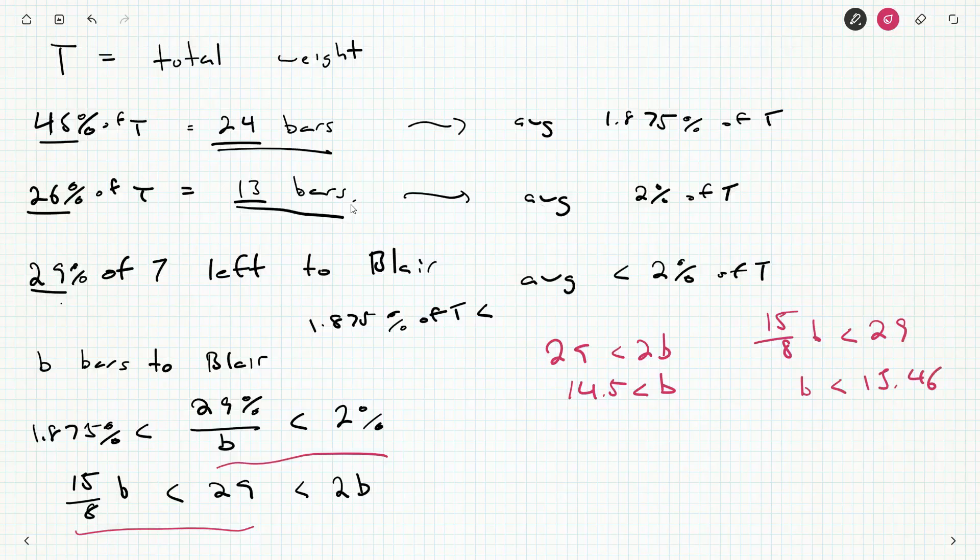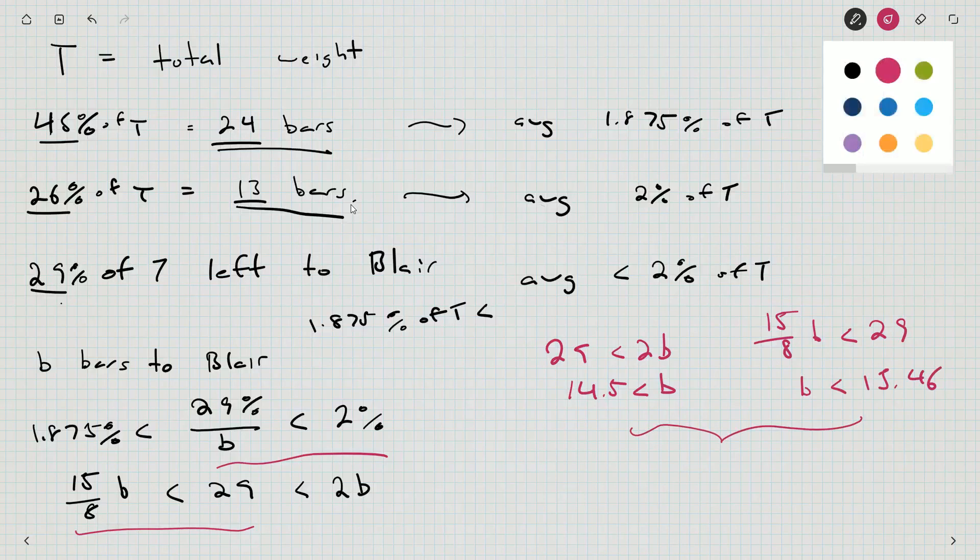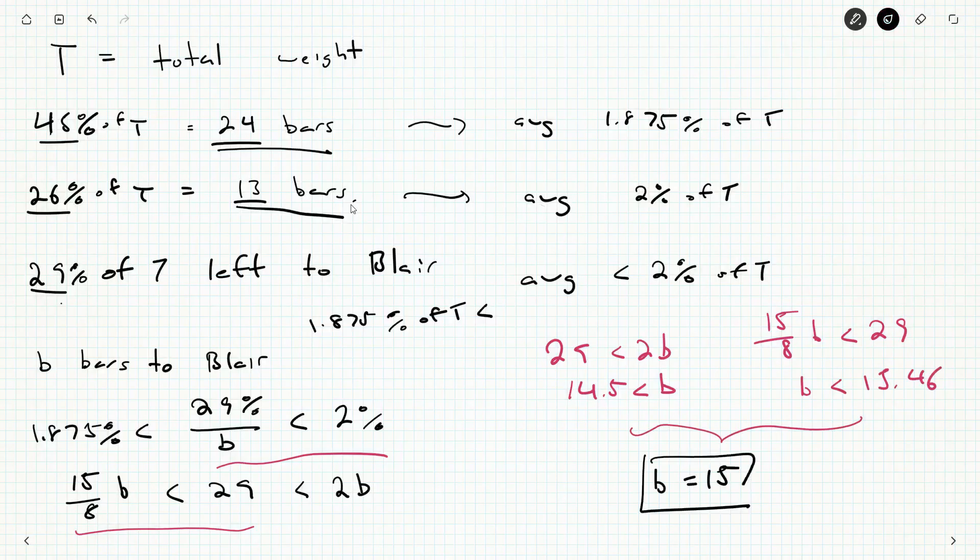The only whole number of bars that we could have that does both of these is 15. So Blair got 15 bars.